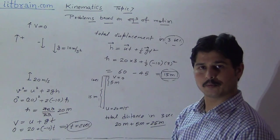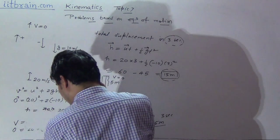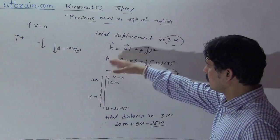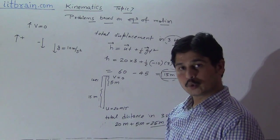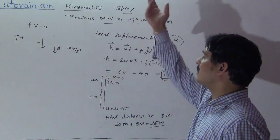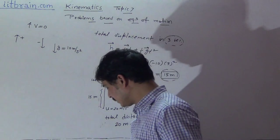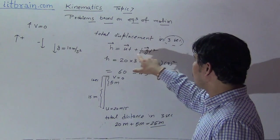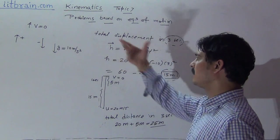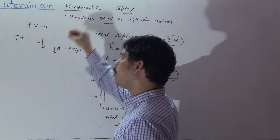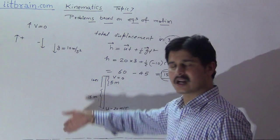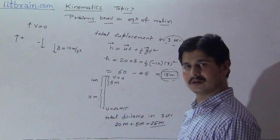In Galileo's equations, gravity is always downward. U is the initial velocity vector of the particle, so its sign is determined once at the start. It will be either plus or minus depending on direction. Gravity's direction is always downward. U is a consistent vector — it is the starting velocity decided once and not changed.